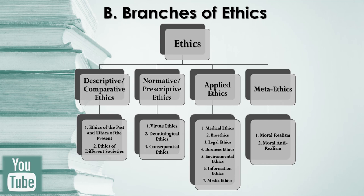To put our discussion in context, let us briefly explain the different branches of ethics. The first branch is descriptive ethics. This branch describes what people actually believe to be right or wrong, and accordingly holds up human actions either as acceptable or unacceptable. It is also called comparative ethics, as it gives a comparison between or among the ethics of different people and times. Under this branch we can study the ethics of the past and the ethics of the present, as well as the ethics of different societies.